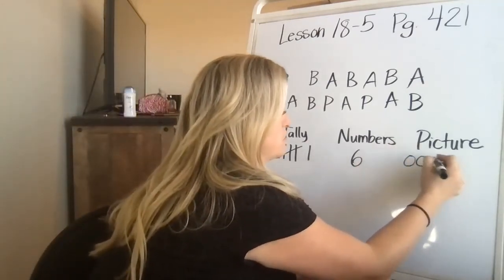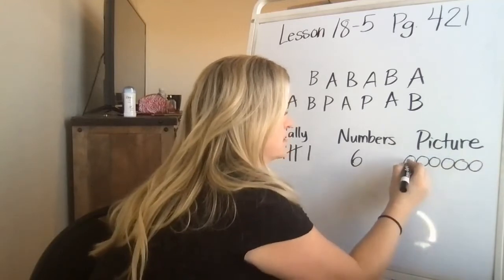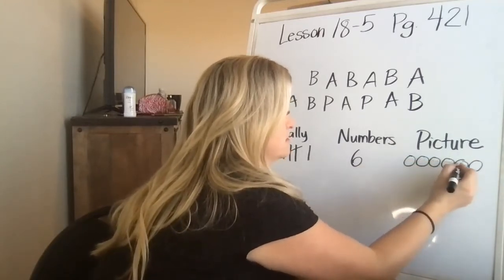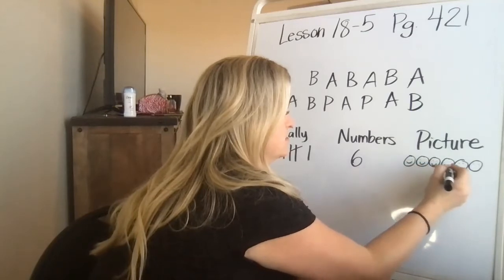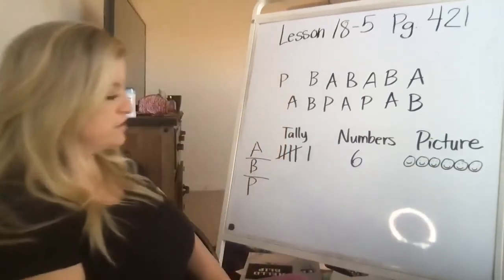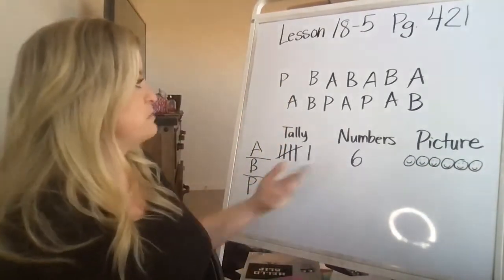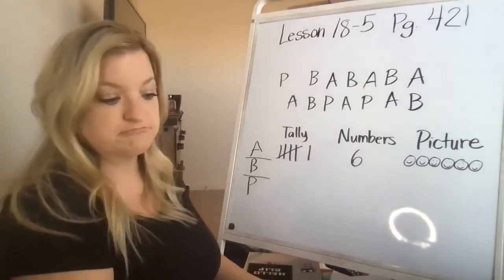We're going to do little faces. One, two, three, four, five, six. Give them all eyes, give them all smileys. There's your picture. Maybe this is six people like apples the best.